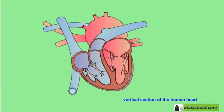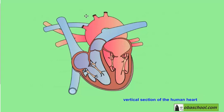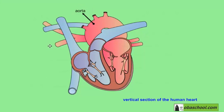After seeing the structure of the heart from the outside, it's time to see a vertical section of the human heart. That means that the heart is cut vertically so we can see the inside. So this is, as we said previously, the aorta — the big artery that supplies the cells of the body with oxygenated blood from the heart.